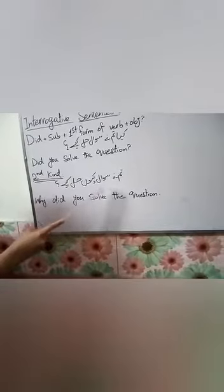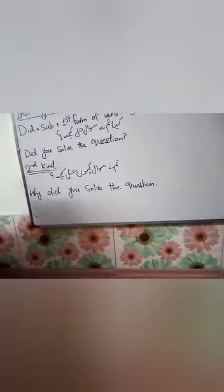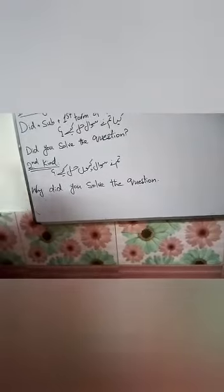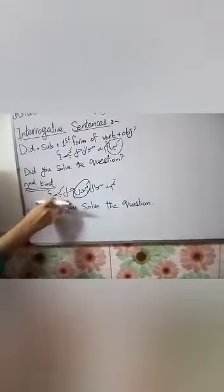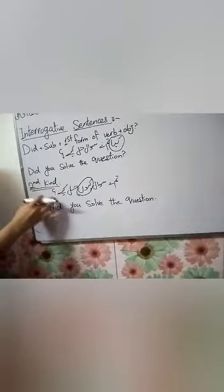The second kind of question is a WH-question, for example: 'Why did you solve the problem?' Here you will discuss the interrogative sentence with a reason — if you have a question with a reason, it will be the interrogative sentence.